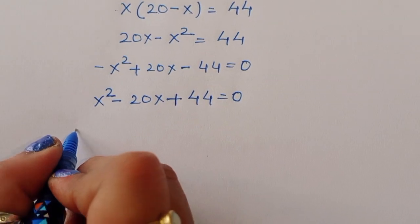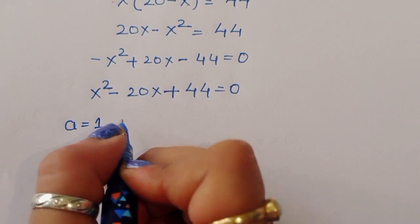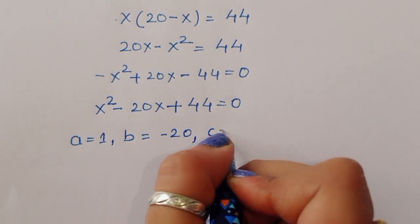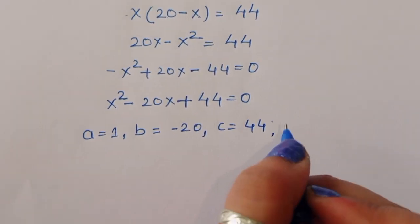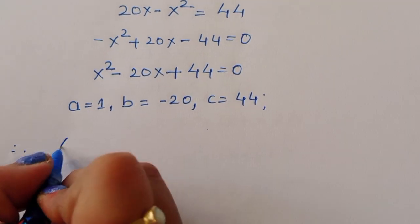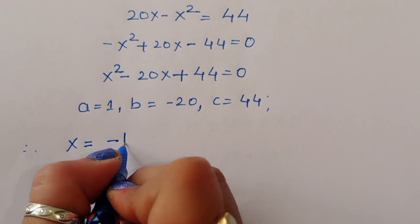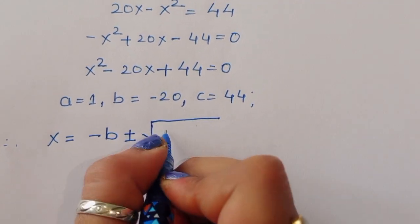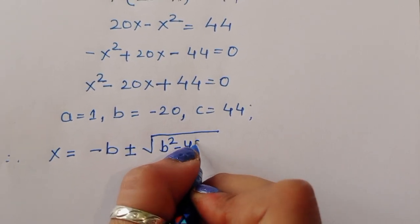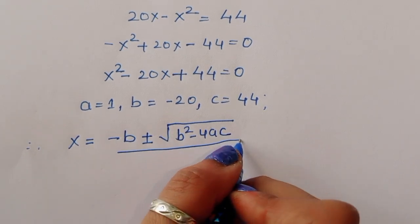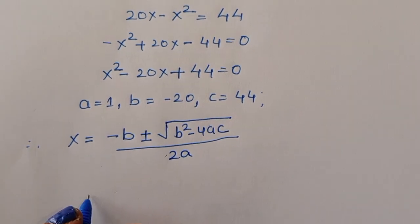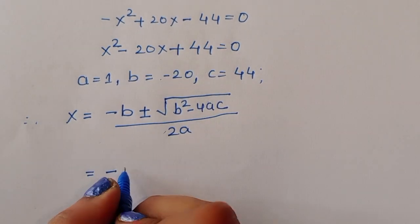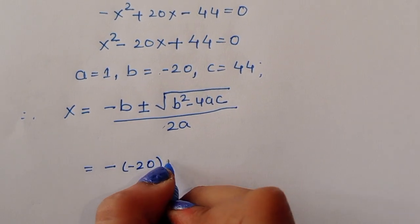Now the coefficient of x squared, a, is equal to 1; b is equal to minus 20; and c is equal to 44. Therefore, using the quadratic formula, x equals minus b plus or minus the square root of b squared minus 4ac, all divided by 2a.